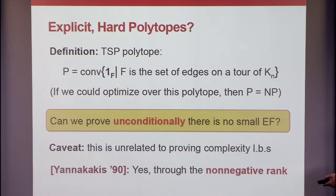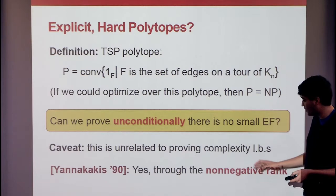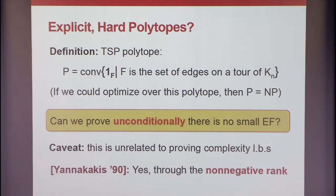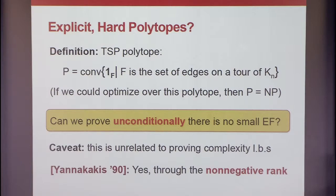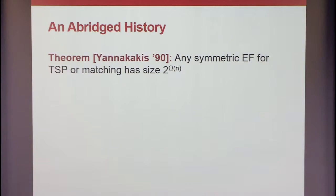What I want to describe now is the general program that Yannakakis set forth in 1990 for proving lower bounds against this geometric parameter — whether there is a compact representation for explicit hard polytopes. The way he did it was through an amazing connection between geometry and algebra: extension complexity turns out to be related to something called the non-negative rank. And ultimately I want to show how you can use tools from information theory to prove lower bounds against non-negative rank and against representational questions.